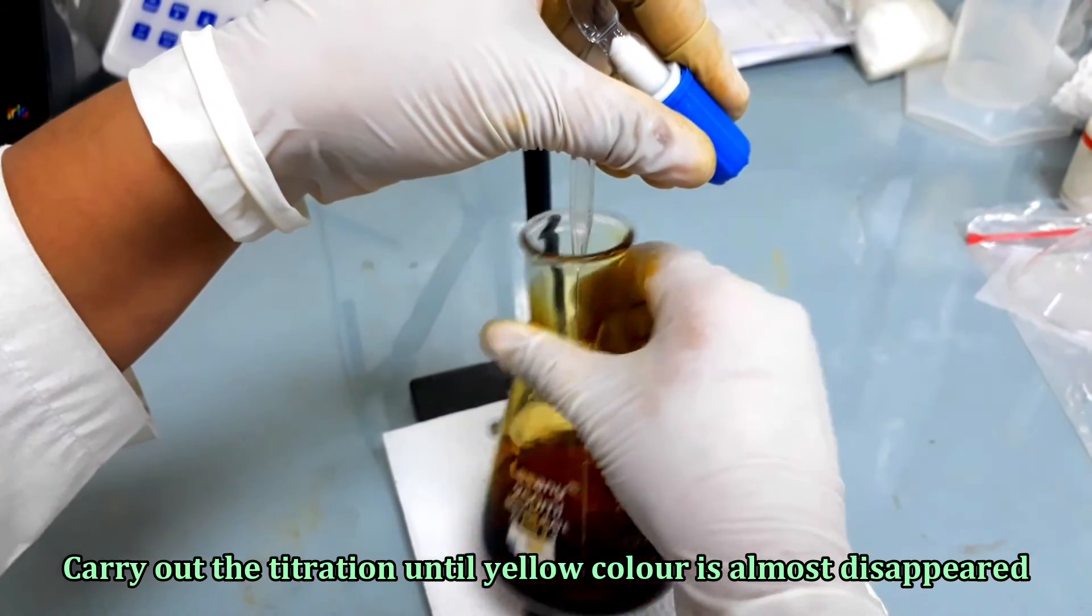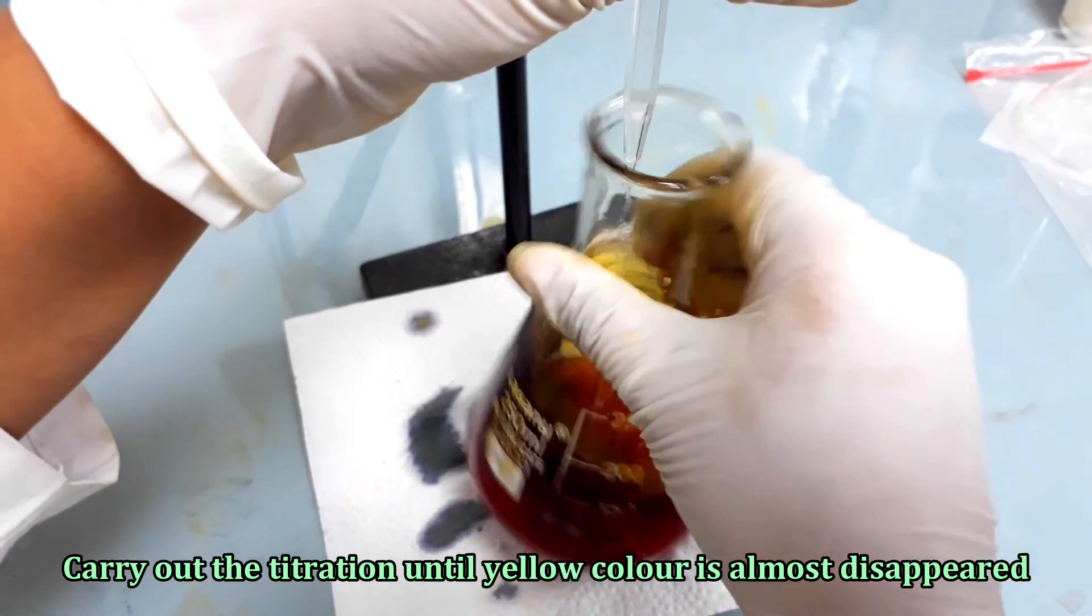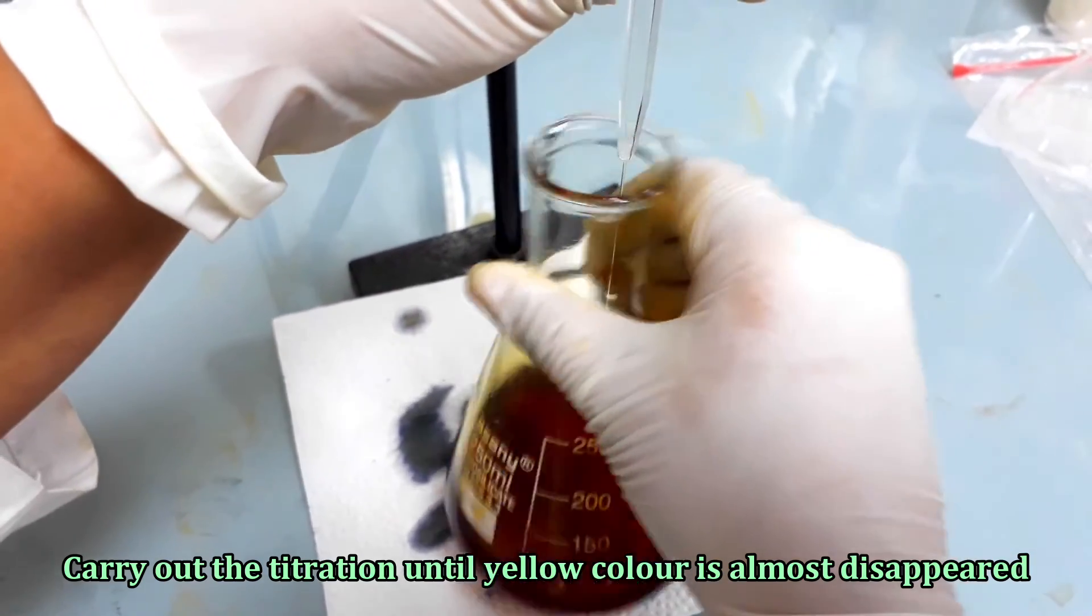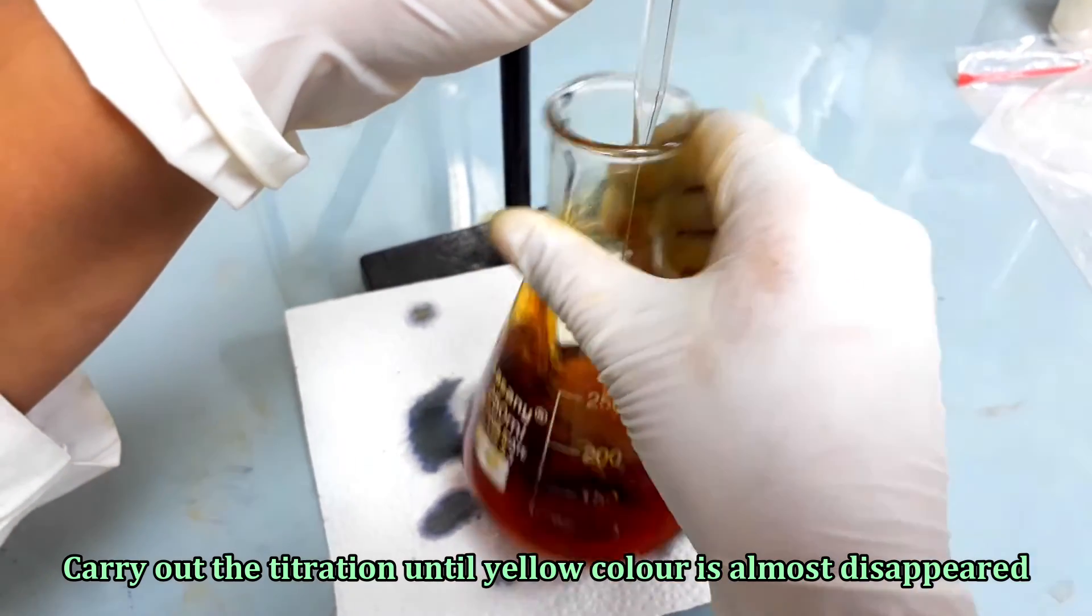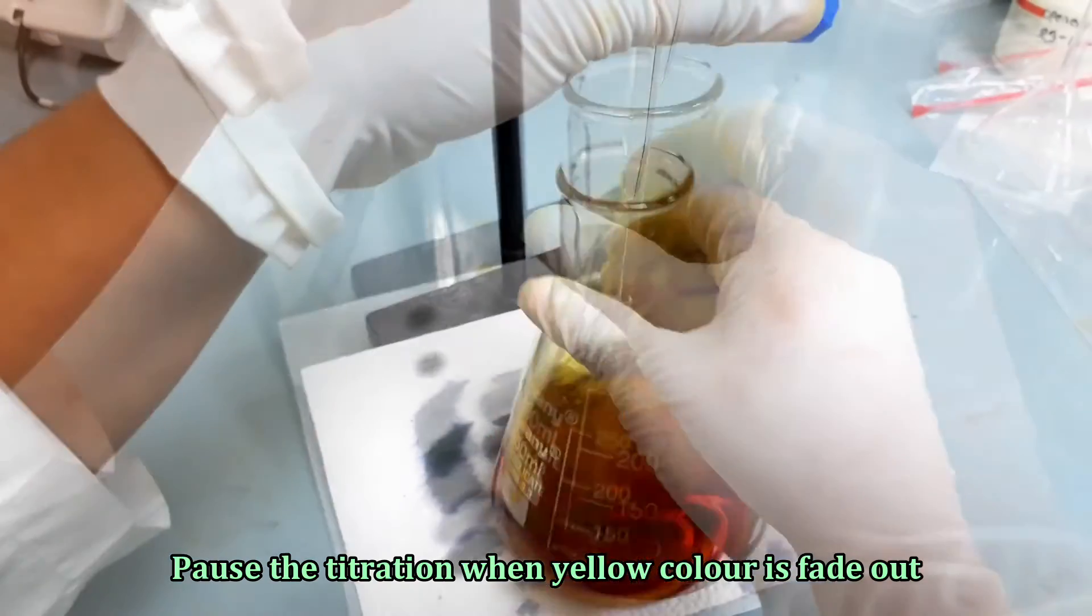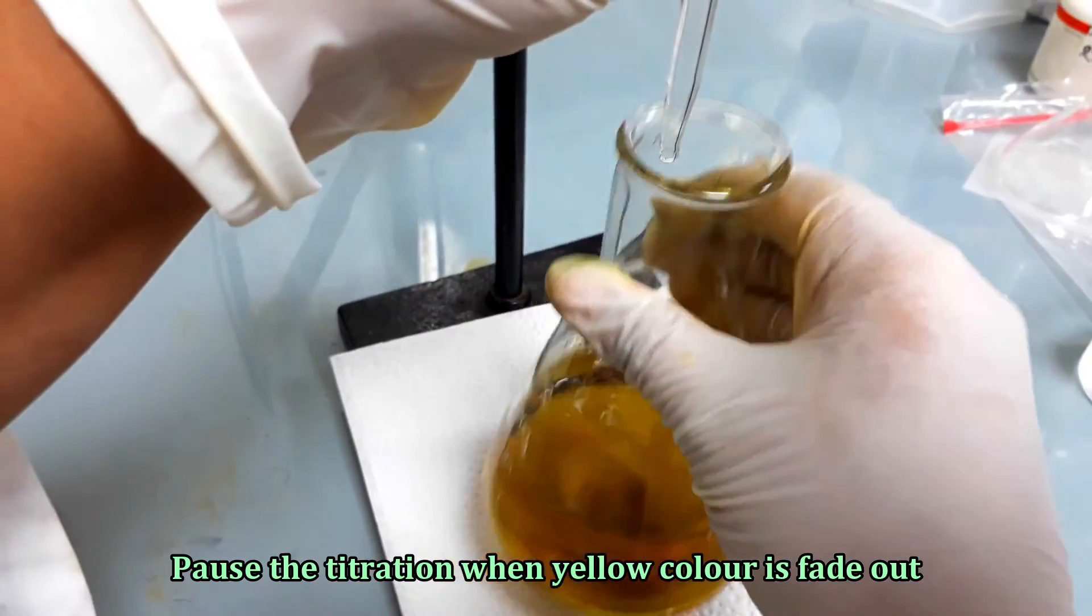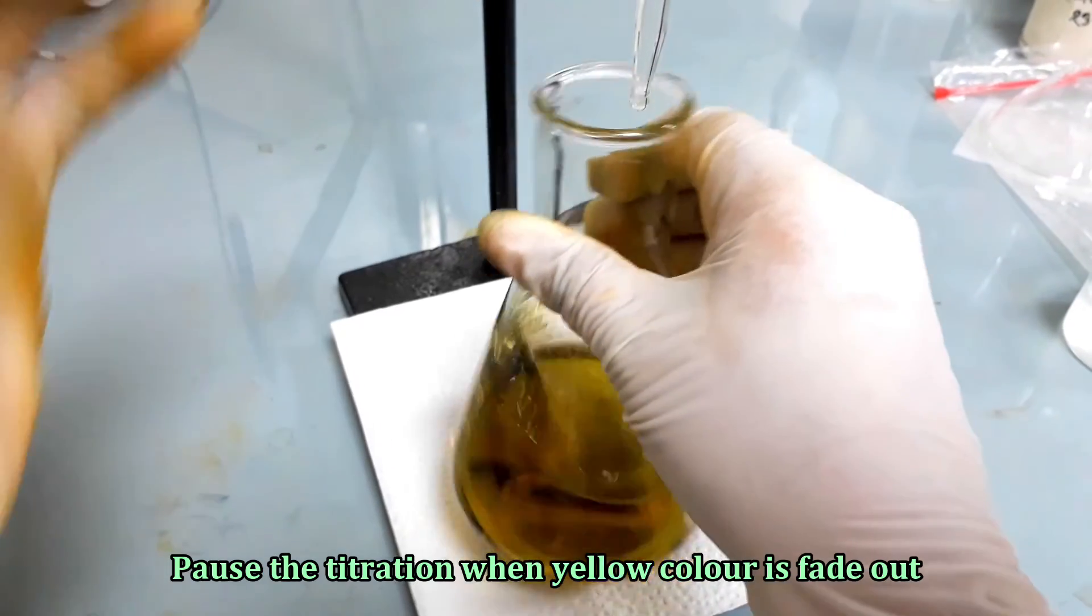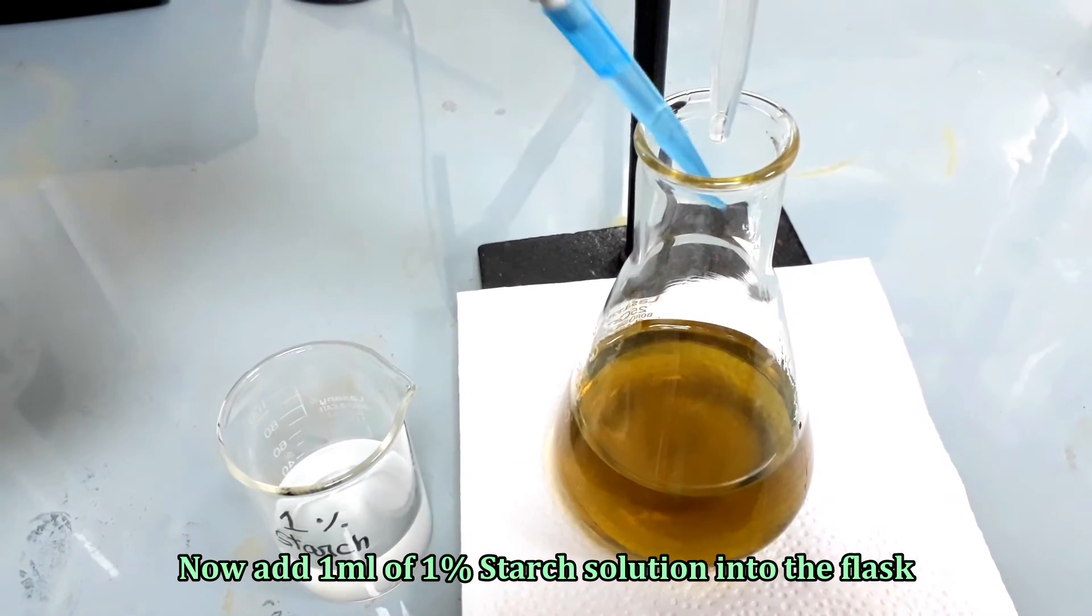Carry out the titration until yellow color is almost disappeared. Pause the titration. Now add 1 ml of 1% starch solution into the flask and resume the titration.